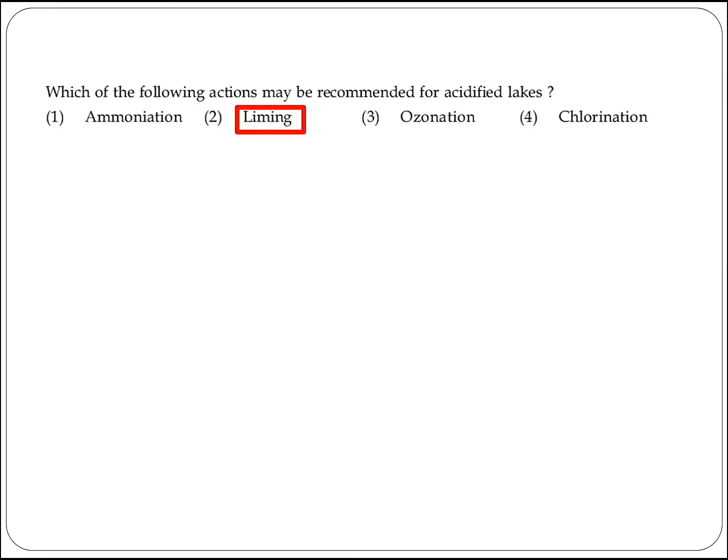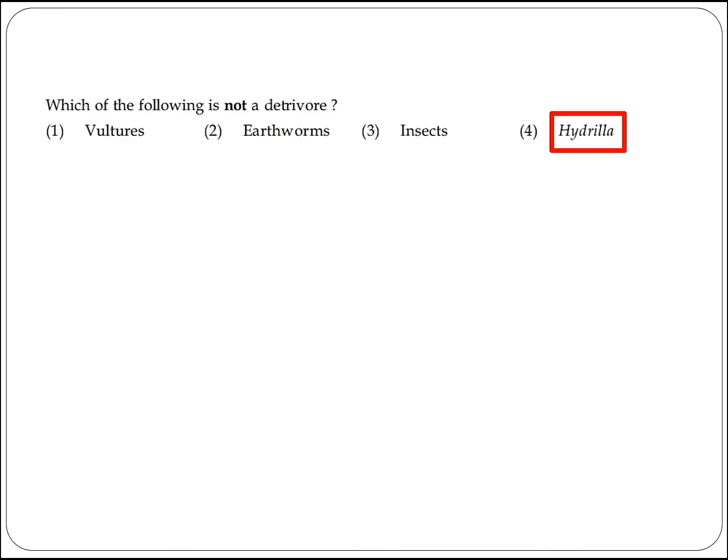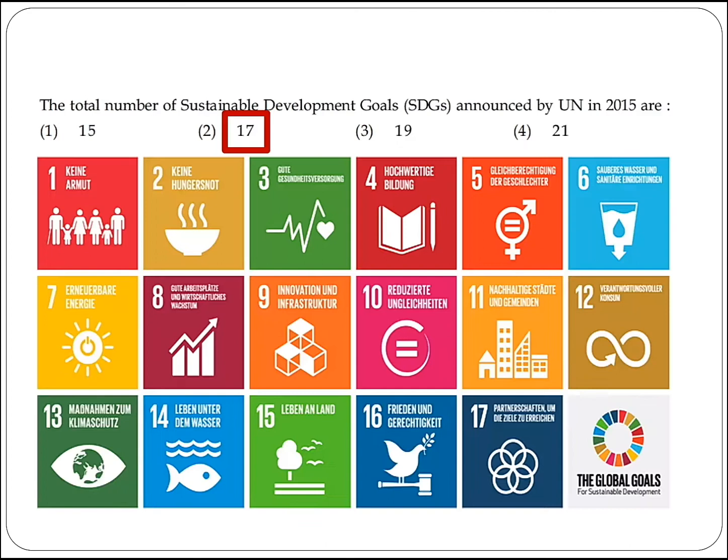The next question asks which of the following actions may be recommended for an acidified lake — liming to increase the pH. The following question asks which of the following is not a detrital organism — hydrilla. Option 4 is the right answer.